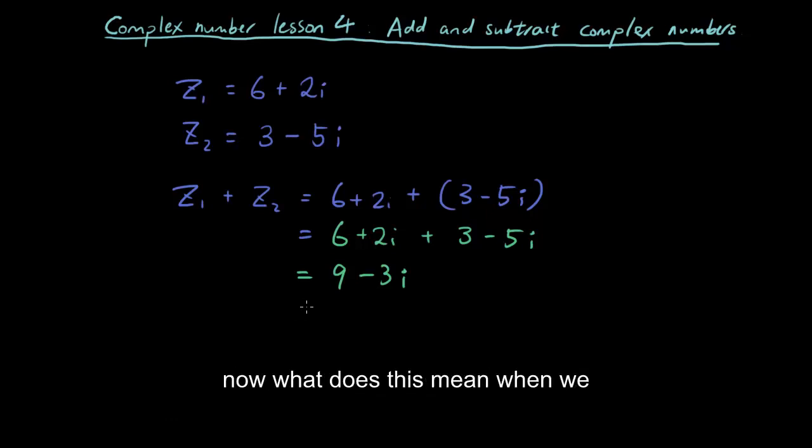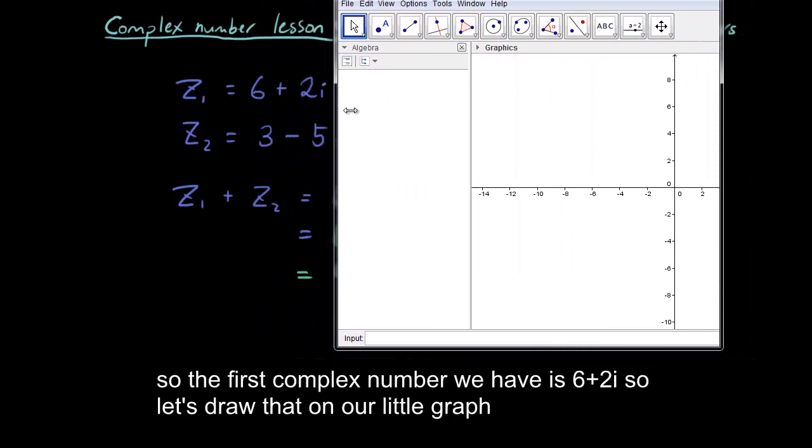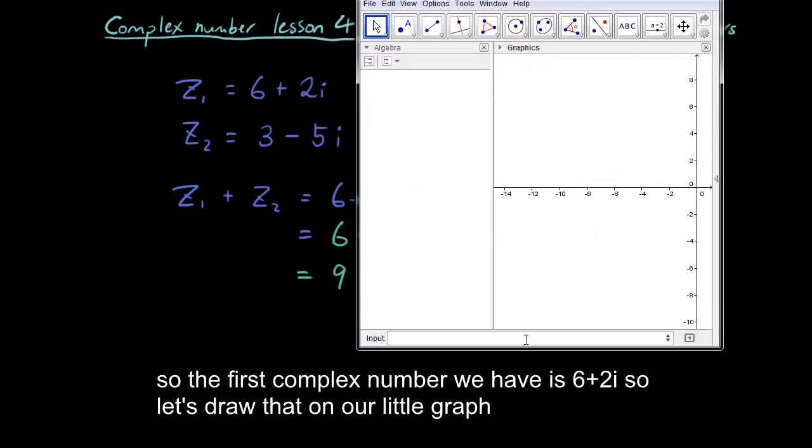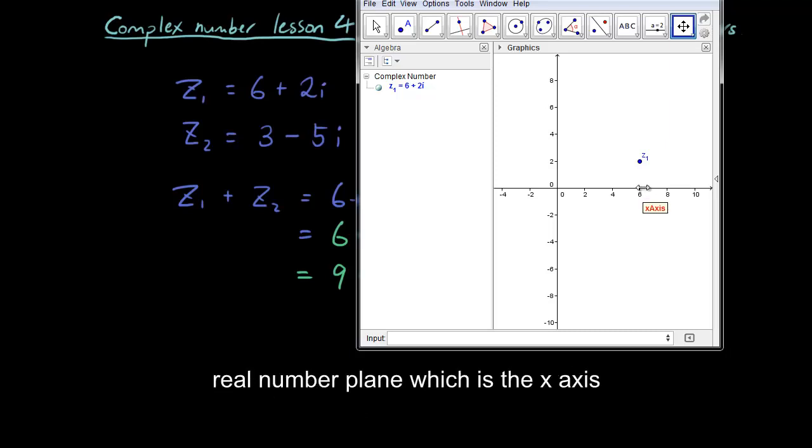Now, what does this mean when we do a graph? So let's have a look using Geogebra. So the first complex number we have is 6 plus 2i. So let's draw that on our little graph. So you can see here I have just drawn 6 plus 2i onto the graph. 6 for the real number plane, which is the x-axis. And 2 for the imaginary plane, which is the y-axis.